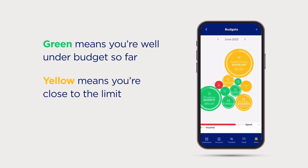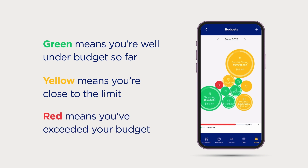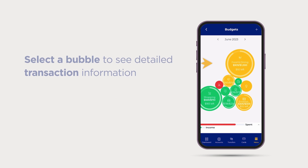Yellow means you're close to the limit, so you might want to slow down your spending. Red means you've exceeded your budget, but that's okay — you'll get it next time.